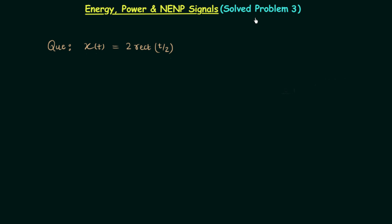In this lecture we will solve problem number 3 and like the previous two problems we will try to find out if the given signal is an energy signal, power signal, or NP signal. The signal is x(t) = 2·rect(t/2), and to solve this problem you need knowledge of rectangular signals.